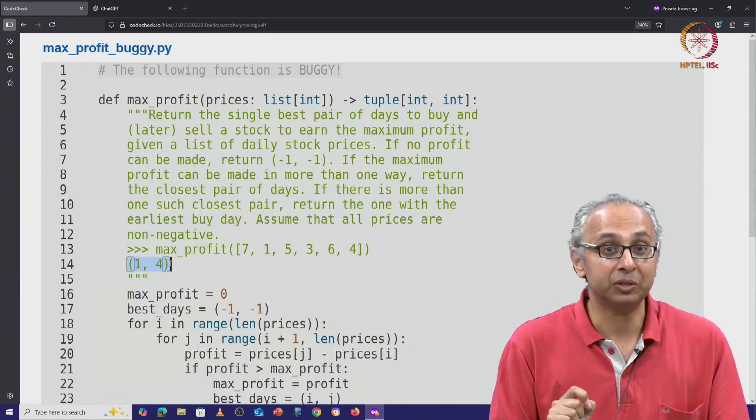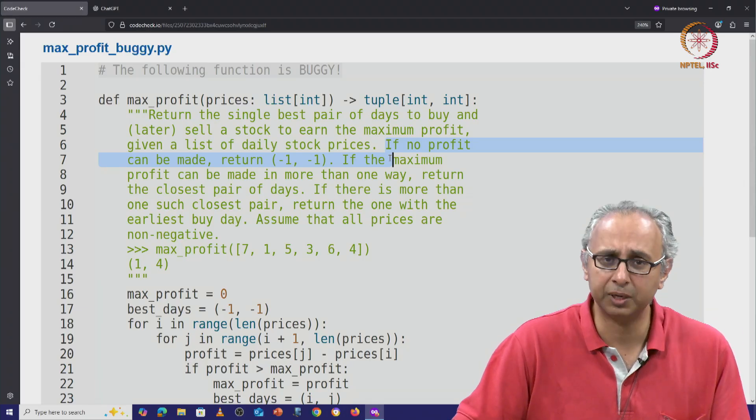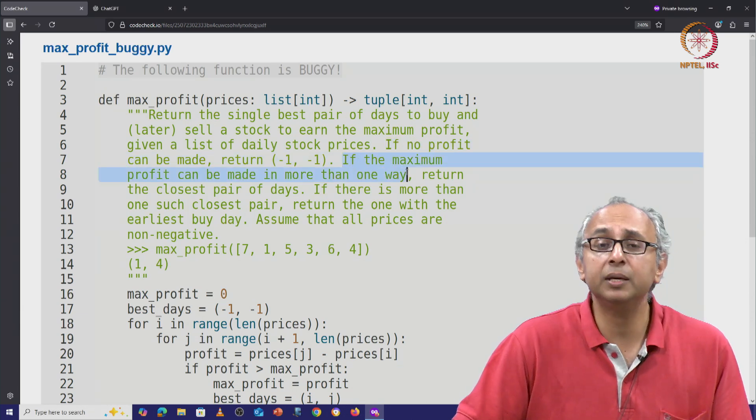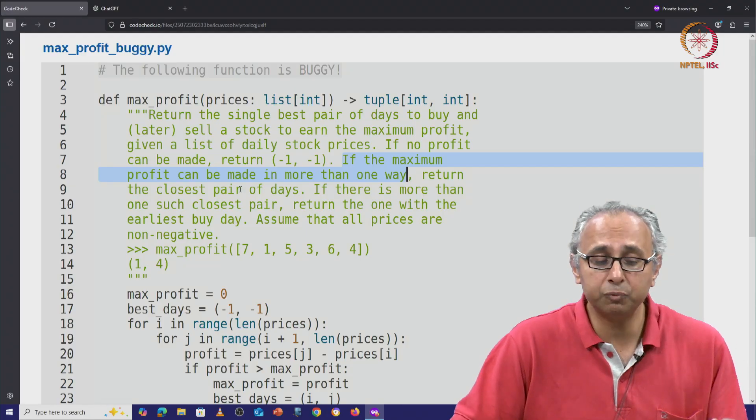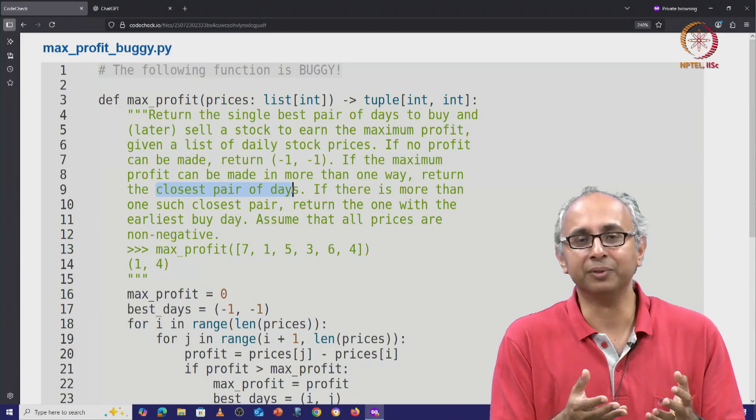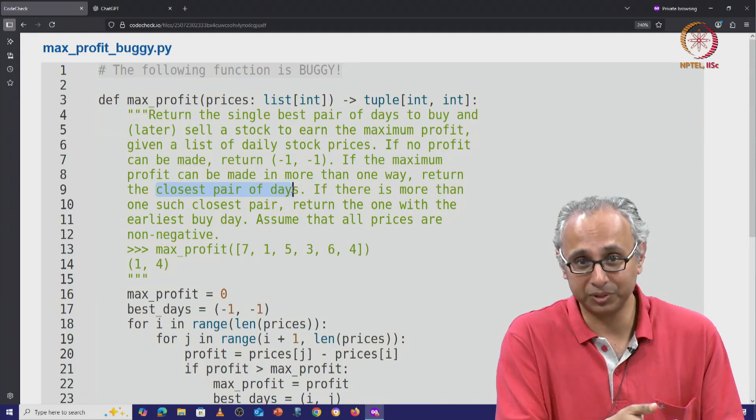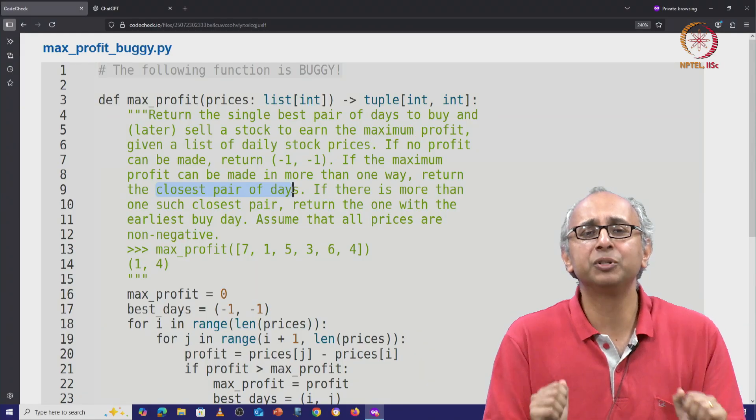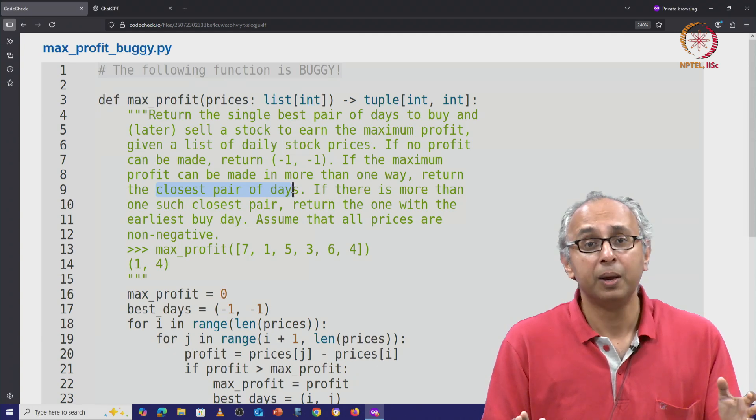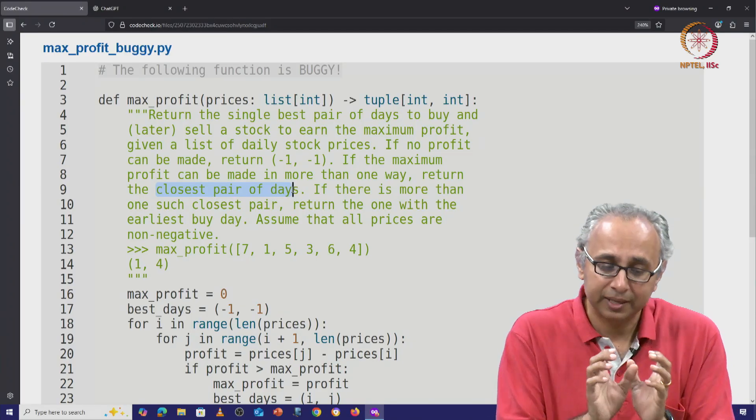But now there are some more details in the doc string. We've already said that if no profit can be earned then we have to return minus 1, minus 1. In this case we were able to earn some profit. But it then says if the maximum profit can be earned in more than one way, then we have to return the closest pair of days. Intuitively the way to think about this is once you buy something then you have committed some of your financial resources towards that stock. And you want to quickly recover those resources when you sell the stock. So you don't want the gap to be very big.